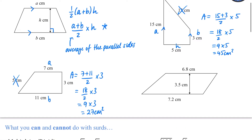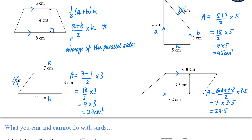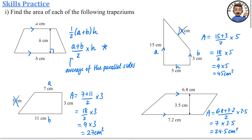This last one doesn't look like a traditional trapezium, but it is one because it has two parallel sides and is a quadrilateral, and we've been given the perpendicular height. The area is (6.8 + 7.2) ÷ 2 × 3.5: 6.8 + 7.2 = 14, divided by 2 gives 7, and 7 × 3.5 = 24.5 cm².